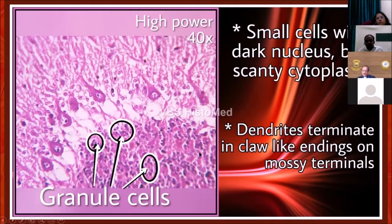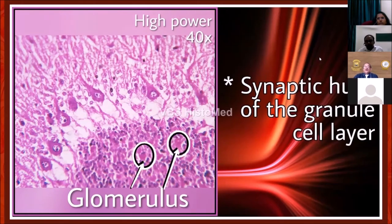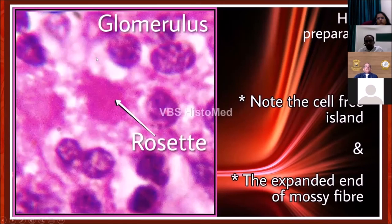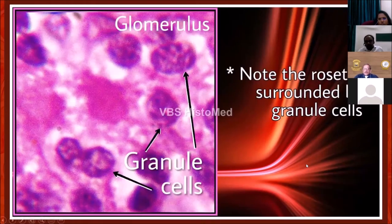Now, watch carefully what I am going to show you — routinely missed in traditional light microscopy. I searched through about 20 different slides from my collection for about half an hour and was able to find it. That's the glomerulus — the synaptic hub of the granule cell layer. You can see a cell-free island that looks like a secretion or terminal of a nerve fiber; around it you can see granule cells. This concept is called a rosette — that rosette is nothing but the expanded end of a mossy fiber — and you can see the granule cells having synaptic junctions with this rosette.